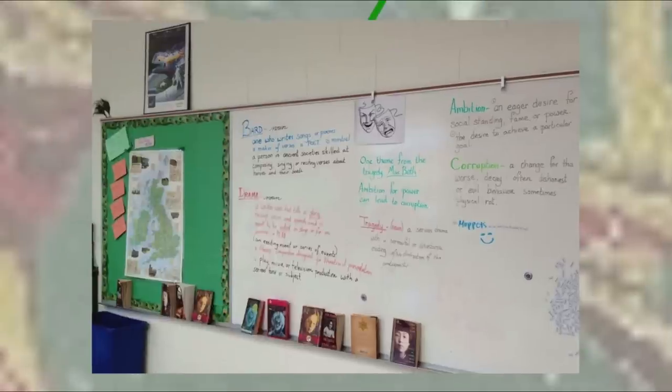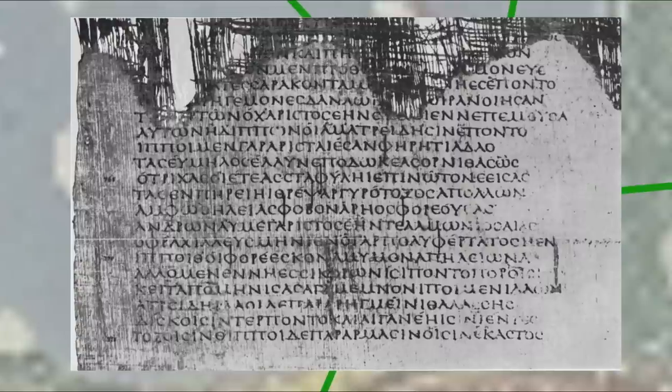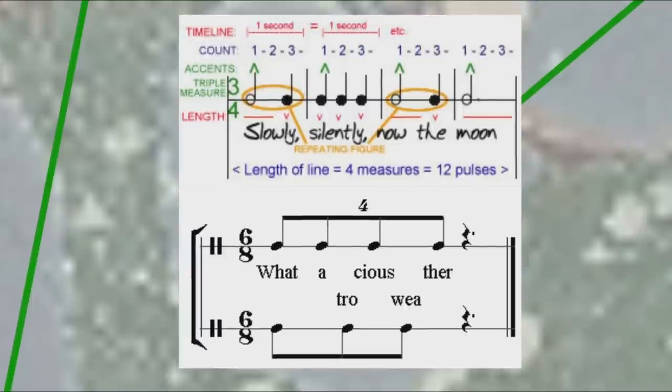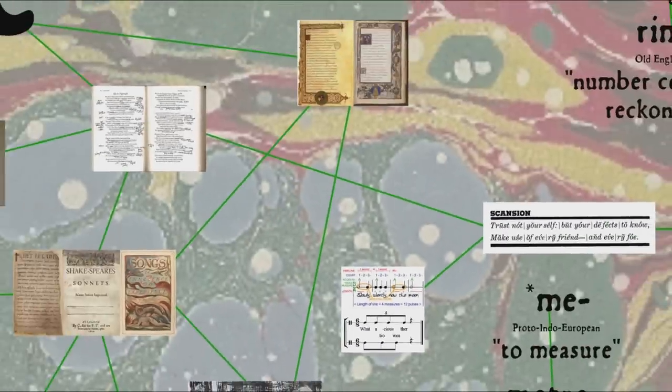Now different poetic traditions from around the world have different systems for their metrics, but the one you'll most likely come across in an English literature class is essentially the one borrowed from the Greeks, though I'll make one caveat that Greek metrics is quantitative, that is, it's concerned with long and short syllables, literally how long it takes to say each syllable, whereas English metrics is accentual and depends on which syllables are stressed or unstressed. Nevertheless, we tend to use the same terminology from the Greeks, also used by the Romans, to refer to English metre.